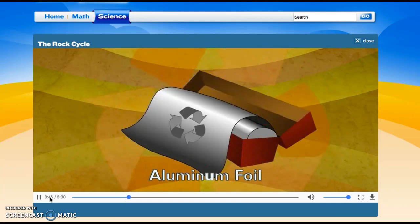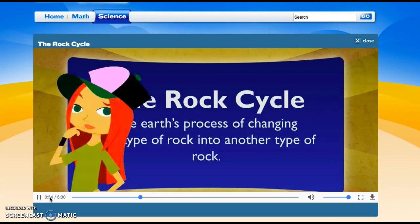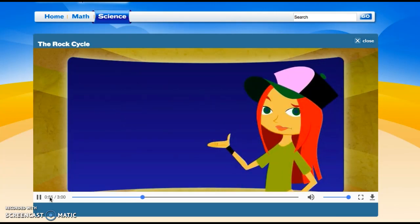I didn't know recycling the cans meant melting them. Yeah, and that's what happens in the rock cycle too. The rock cycle is the Earth's process of changing one type of rock into another type of rock.